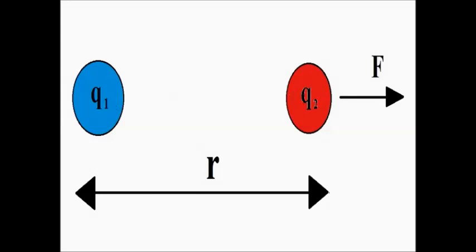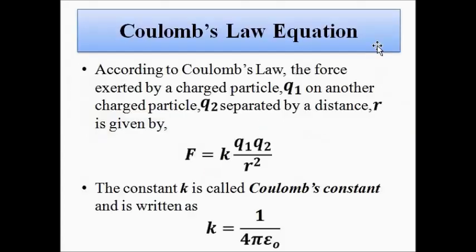Suppose we have two point charges q1 and q2 separated by a distance r, and we want to find the electric force exerted by charge q1 on charge q2. That force is given by Coulomb's law equation: F equals k times q1 times q2 divided by r squared. The constant k is called Coulomb's constant.